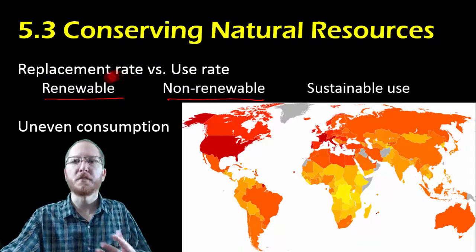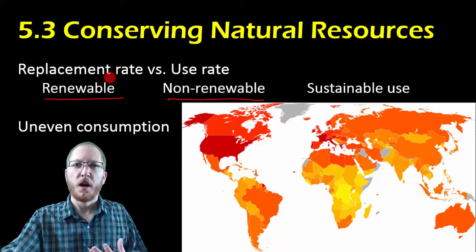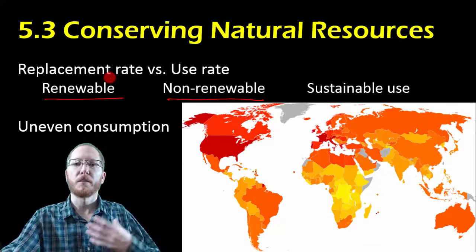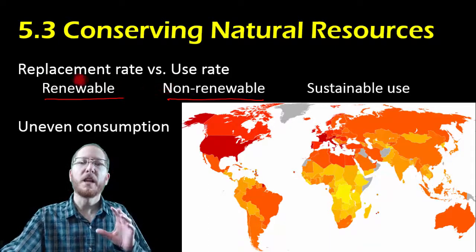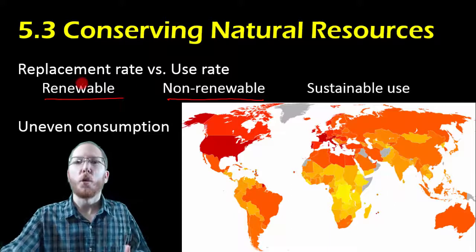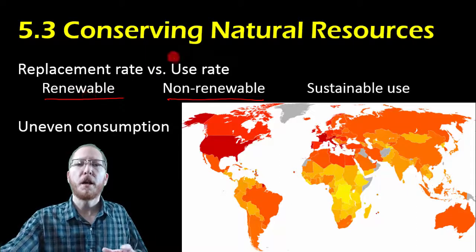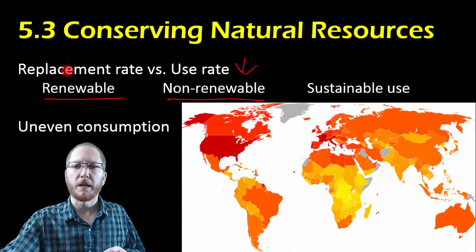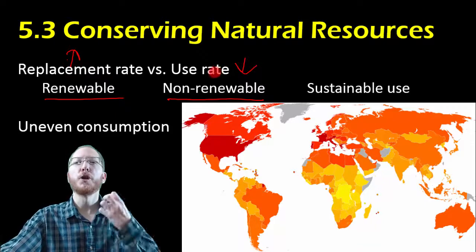For example, it could be trees if you're talking about lumber, natural gas, oil, or coal if you're talking about fossil fuels, or animals and how fast they reproduce to replenish themselves. If we compare the rate at which we're using something to the rate at which we're getting more of it, we can get a sense of whether we're exhausting it too quickly. A renewable resource is one where our use rate is less than or equal to our replacement rate — replacement rate high, use rate low.